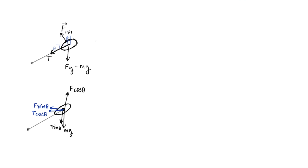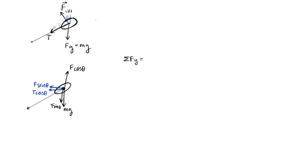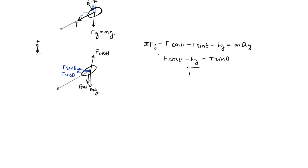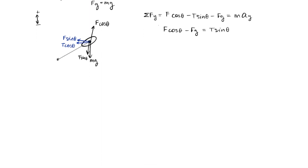We can compute things in the y direction, which is vertical. Let's start by summing our forces in the y direction. Given that upward is positive and downward is negative, that equals F cosine of theta minus T sine of theta minus force of gravity, which equals mass times acceleration in the y direction. Isolating T, we get force cosine of theta minus force of gravity equals T sine of theta. The problem is we don't know force of lift, so we need to bring in another equation.